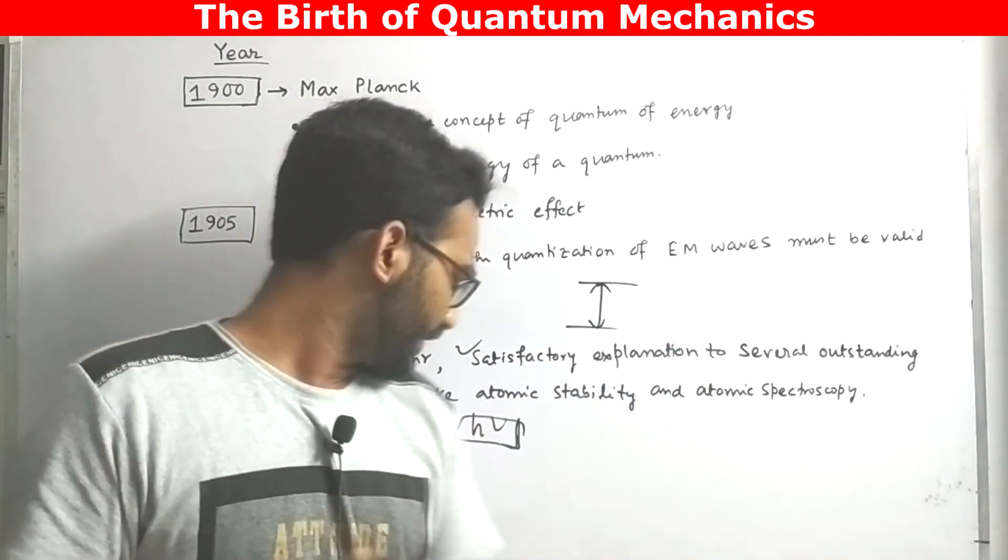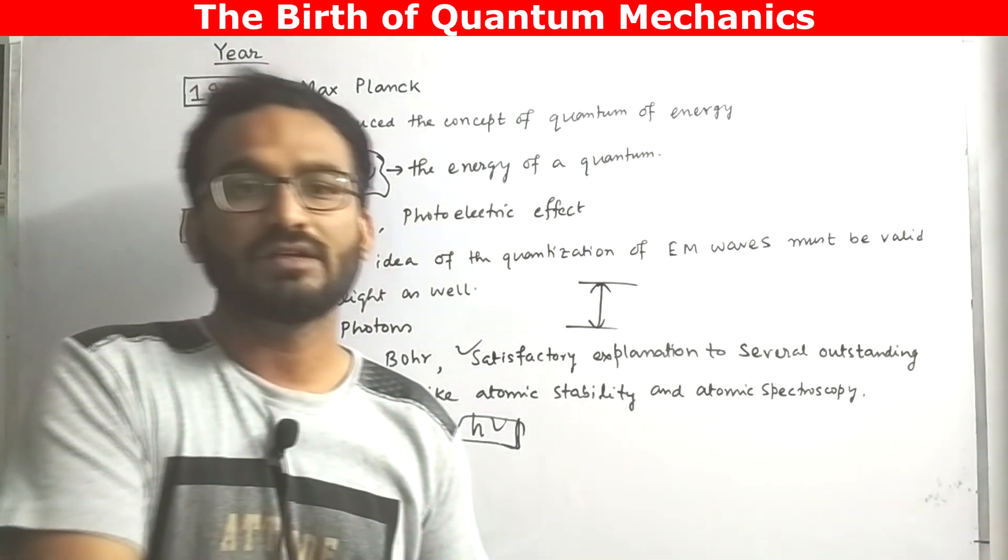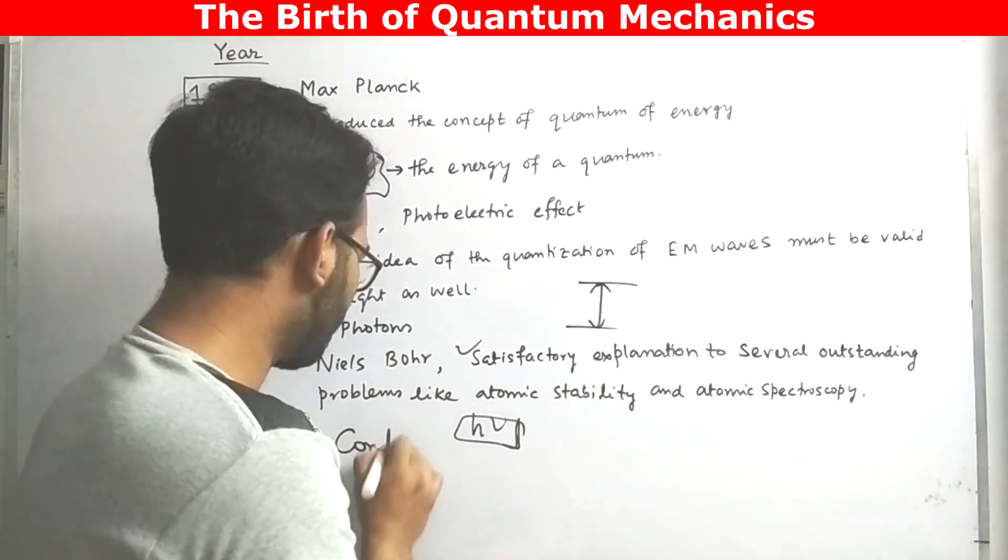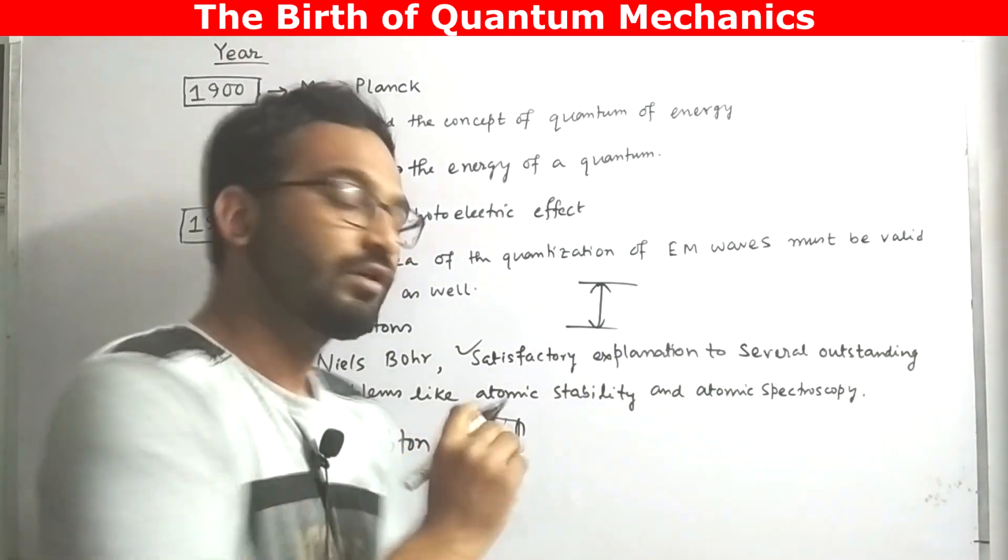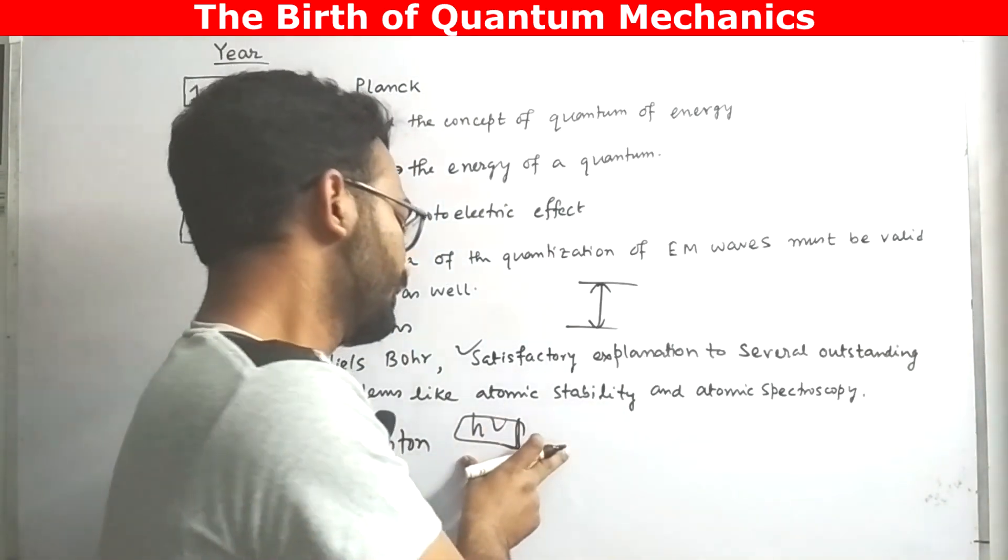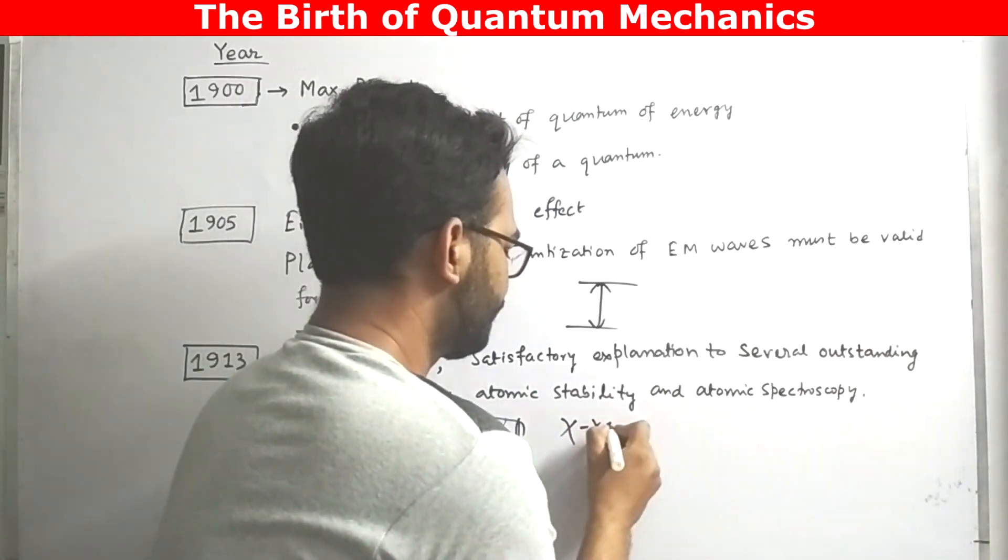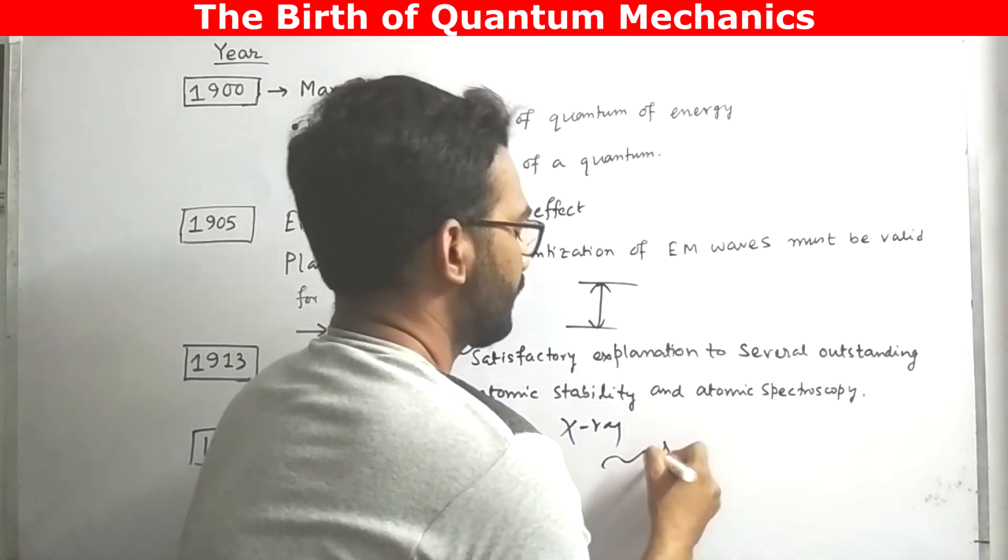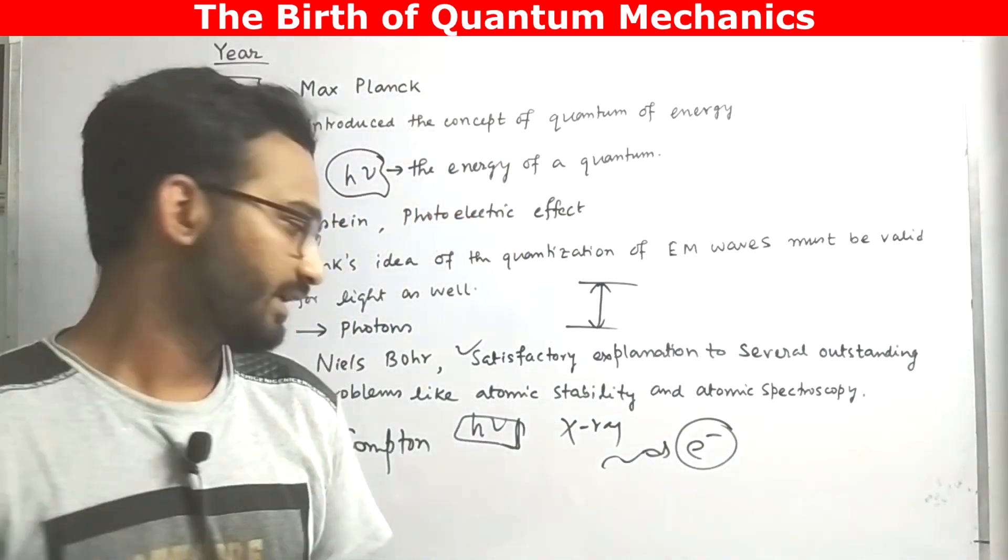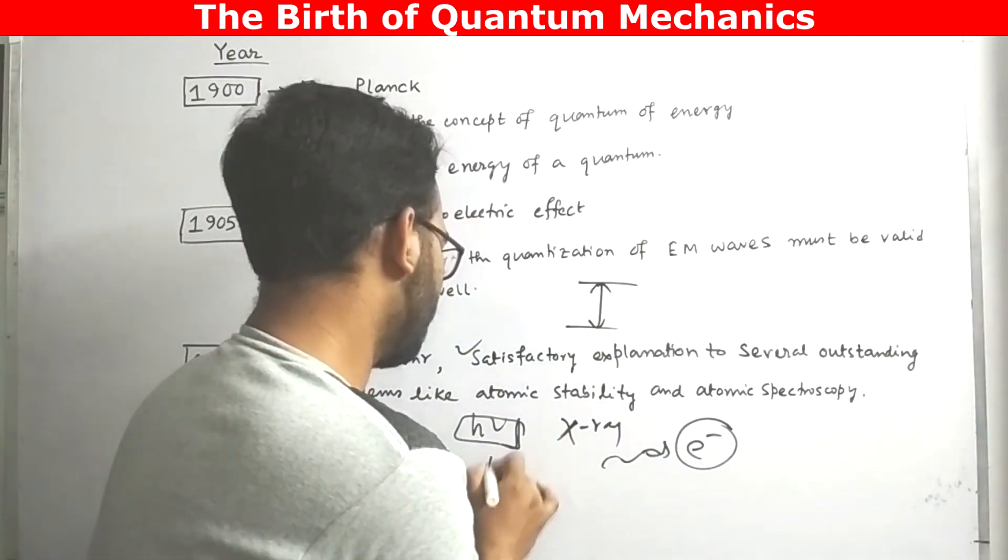In the year 1923, Compton gave an outstanding explanation. He performed an experiment with X-rays. He fired X-rays on some electrons and the X-ray was scattered. And from this he concluded that X-ray also exhibits particle nature. So he basically established the particle nature of waves.